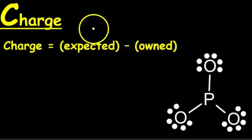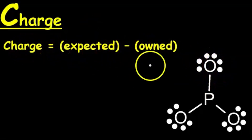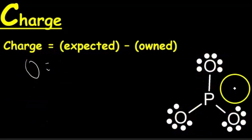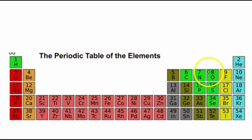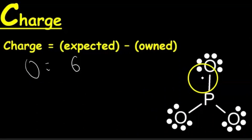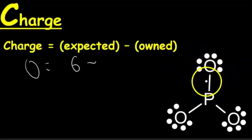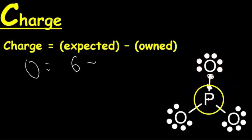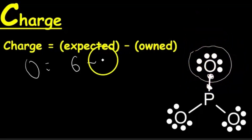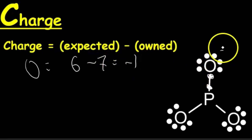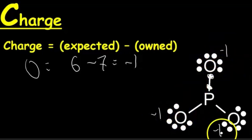Step three: determining the charge on each atom. It's a simple equation — charge equals expected electrons minus owned electrons. For the oxygens in our structure: we expect six electrons based on the periodic table. Each oxygen owns its six lone-pair electrons plus one electron from the bond, for a total of seven owned electrons. So the charge is 6 minus 7, which equals negative one. All of these oxygens have a charge of negative one because they're the same.